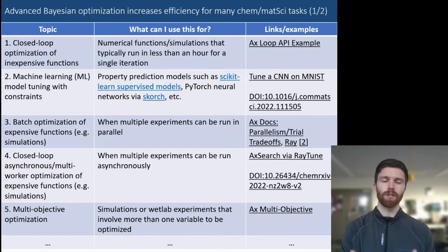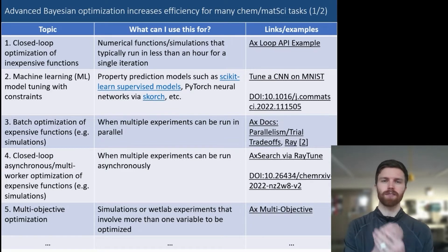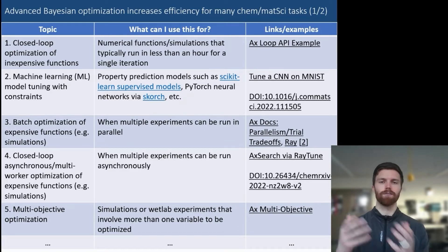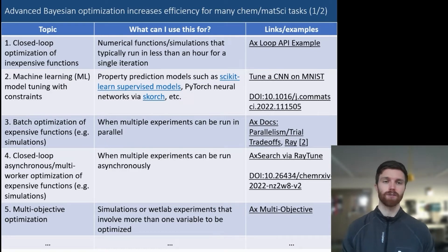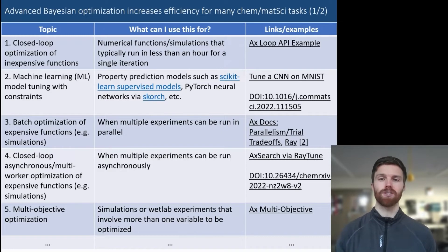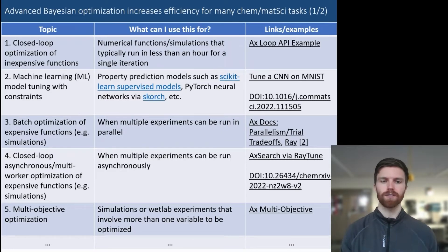In the first notebook, we looked at using the Loop API to perform closed-loop optimization of inexpensive functions. The Loop API is easier to use with a simpler interface, but doesn't allow quite the amount of configurability of the other APIs. We also took a look at model tuning — tuning the hyperparameters of a machine learning model — as well as batch optimization of expensive functions and closed-loop asynchronous optimization of expensive functions.